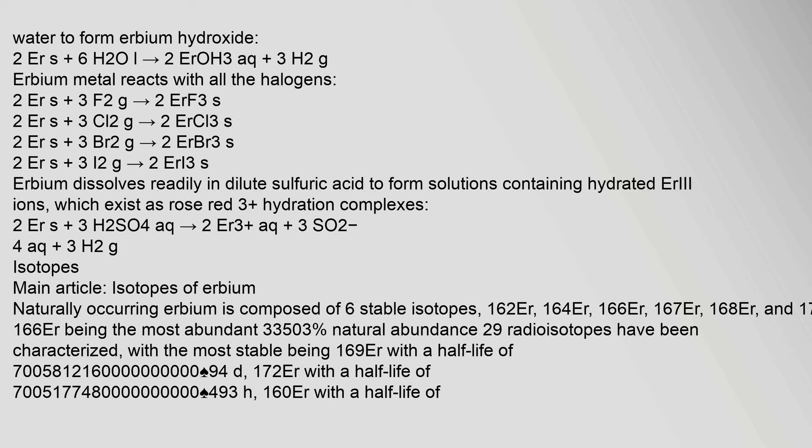Isotopes of erbium: naturally occurring erbium is composed of six stable isotopes — ¹⁶²Er, ¹⁶⁴Er, ¹⁶⁶Er, ¹⁶⁷Er, ¹⁶⁸Er, and ¹⁷⁰Er — with ¹⁶⁶Er being the most abundant at 33.503% natural abundance. Twenty-nine radioisotopes have been characterized.